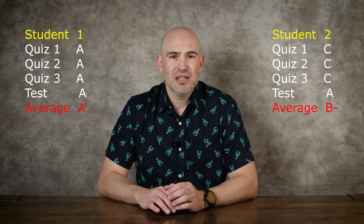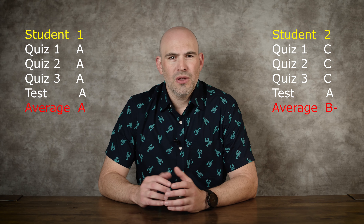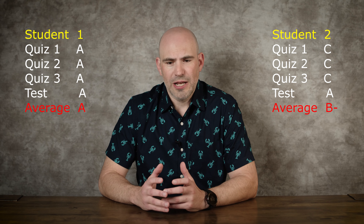Now, what if a student gets a C on a quiz, a C on the next quiz, a C on the next quiz, and then an A on the test? Well, normally what we would do is we would average those three C's and that A. And the kid, depending on the weight of your quizzes and tests, would have a B in the class, or maybe even a high C, depending on how your grading works.